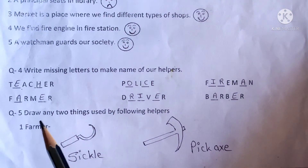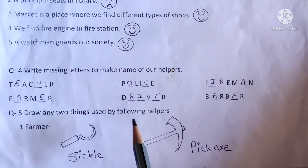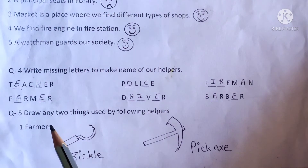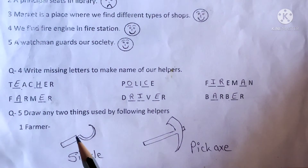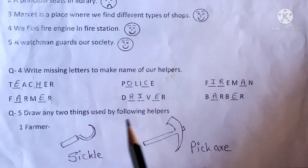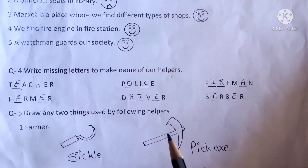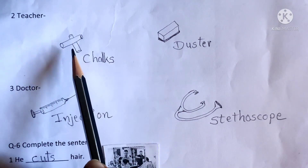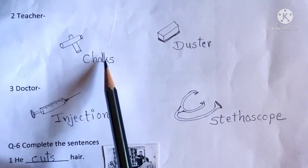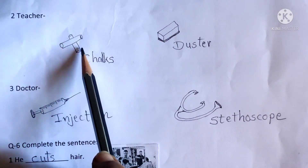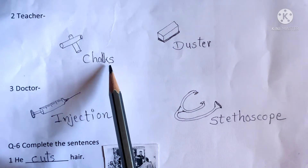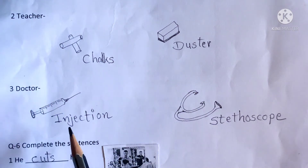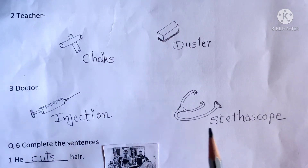Question 5: Draw any two things used by the following helpers. Number 1 — Farmer: used a sickle and a pickaxe. Number 2 — Teacher: used chalks and a duster. Number 3 — Doctor: used an injection and a stethoscope. In this question, you can write your own answer.